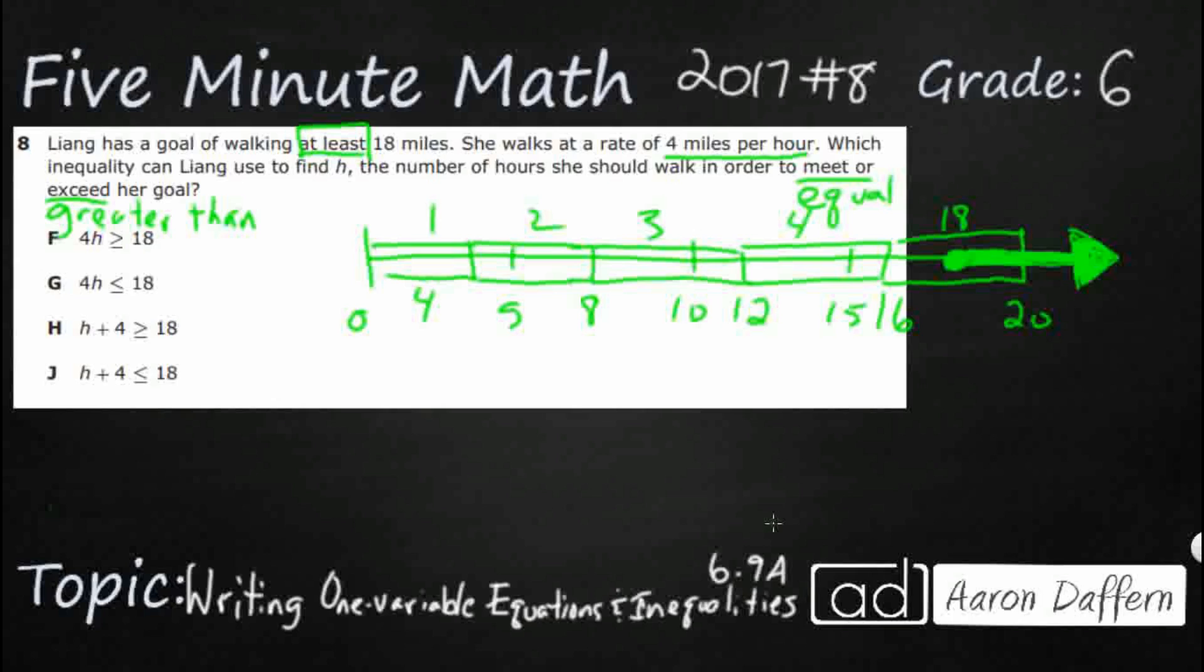So four miles per hour. So this word per gives us multiplication. That's a rate. And anytime we see a rate, that per is a big clue word that we're looking at. Rate miles per hour. That means we're going to multiply. So we're going to multiply the amount that she walks, four miles, times the rate per hour. So four miles per hour equals this 4h.